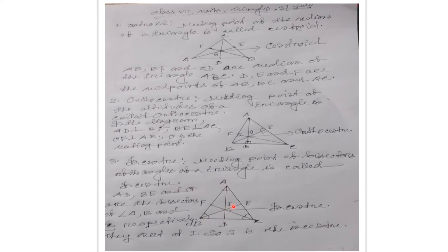So in a triangle there are three bisectors — one for angle A, one for angle B, and one for angle C. These three bisectors always meet at a point, and that meeting point is called the incentre of the triangle. AD, BE and CF are the bisectors of angles A, B and C respectively, and they meet at point I. So I is called the incentre.